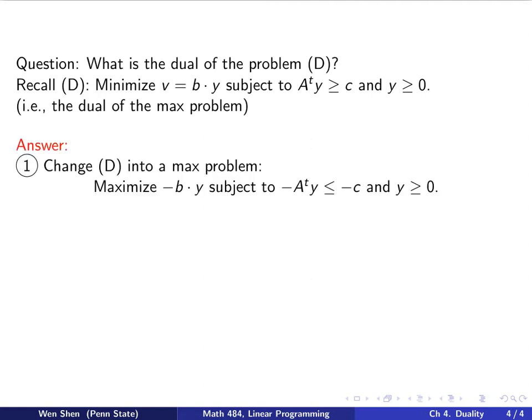We can form the dual of the problem D following the suggestion from the previous page, taking two steps. So step one, I will change the D into a max problem by following our tricks. So first, changing the minimization into maximization by multiplying negative one. So I will maximize negative b dot y, subject to, and then in the max problem I need to have less than equal sign. Here is bigger than equal. Then I multiply by negative on both sides. So negative A^T y less than c and y is bigger than zero. So this becomes a max problem.